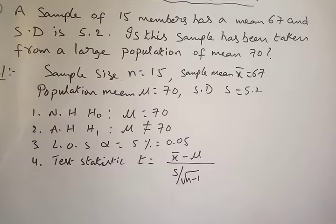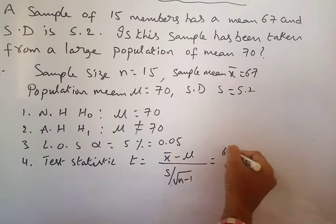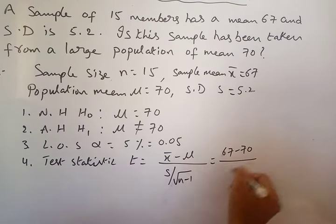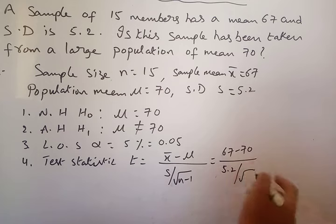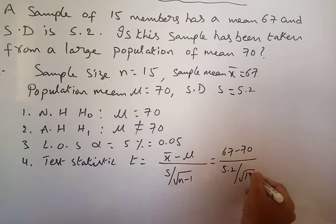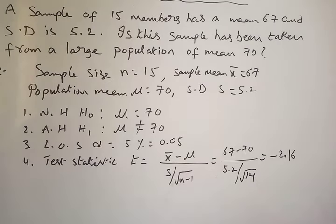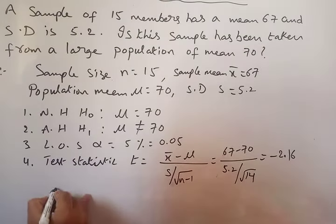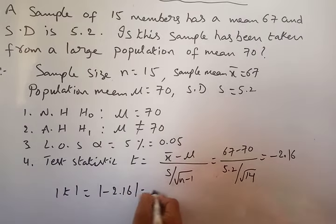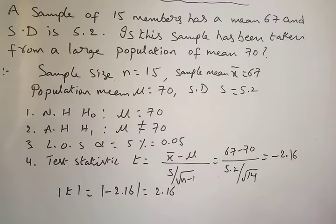Substituting values: t = (67 − 70) / (5.2 / √14). Using the calculator, I got the value −2.16. Taking the absolute value, mod t = 2.16.